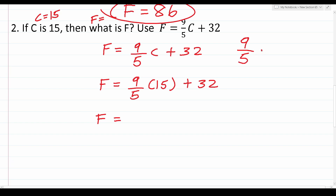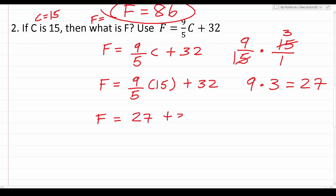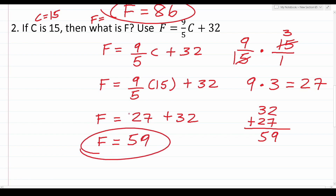Let's take care of this multiplication. We have 9 over 5 — an improper fraction — times 15. We write 15 as a fraction over 1, then reduce: 5 goes into 5 once, and 5 goes into 15 three times. That gives us 9 over 1 times 3 over 1, which is 9 times 3 equals 27. So this becomes 27 plus 32. Working that out: 2 plus 7 is 9, and 3 plus 2 is 5. So F equals 59. If Celsius is 15 degrees, Fahrenheit must be 59 degrees.